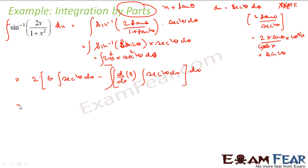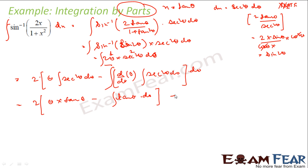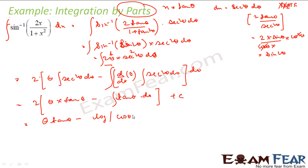This gives 2θ · tan θ minus the integral of 1 times tan θ dθ, plus a constant. The integral of tan θ is log|cos θ|, so we get 2θ tan θ minus log|cos θ|, plus constant.